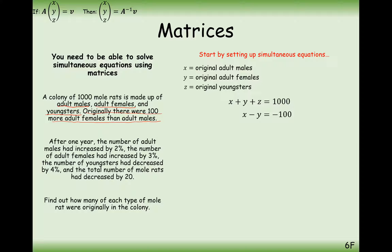The more complicated equation comes from this paragraph. After one year, the number of adult males increases by 2%, the number of adult females increases by 3%, and the number of youngsters has decreased by 4%, and the total number of mole rats has decreased by 20. If we remember, 2% is effectively the same as a scale factor multiplier of 1.02, a 3% increase would be 1.03, and a decrease of 4% would be 0.96 times z. All of these values come from percentage change multipliers. We're told that it's decreased by 20 from originally 1,000, so we've got 980 mole rats left.